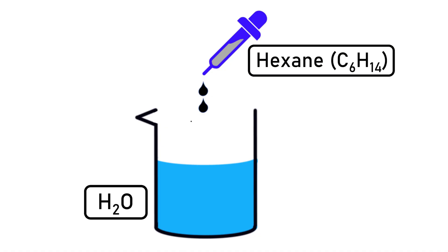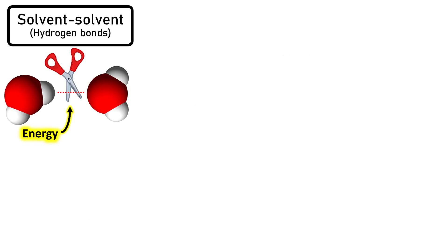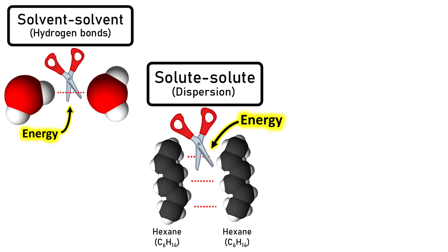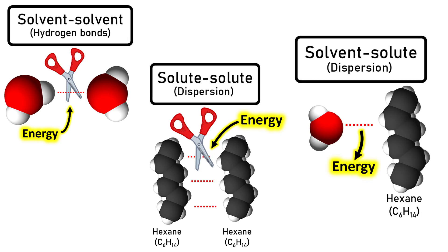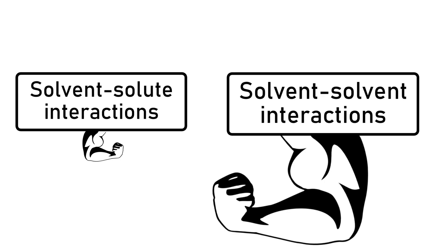Now consider adding hexane, which is non-polar, to water, which is polar. The solvent-solvent interactions are hydrogen bonds between water molecules — strong and requiring a lot of energy to break. The solute-solute interactions are weak dispersion forces between hexane molecules. The solvent-solute interactions are also weak dispersion forces between hexane and water, releasing only a small amount of energy. Water can form hydrogen bonds with other water molecules but not with hexane, so hexane will not dissolve — the disparity between the strength of the solvent-solute and solvent-solvent interactions is simply too large, even though entropy strongly favors mixing.